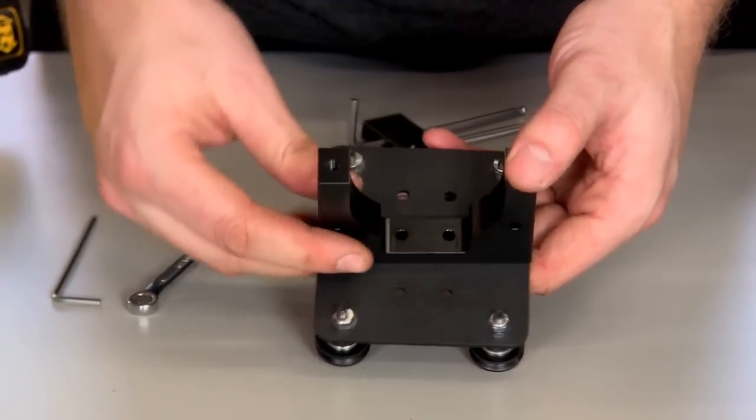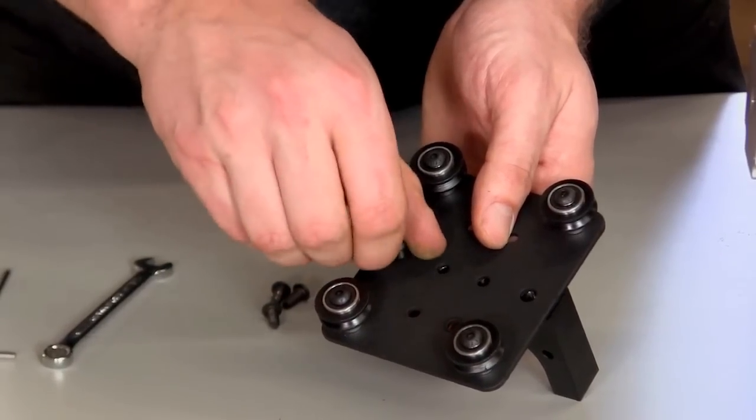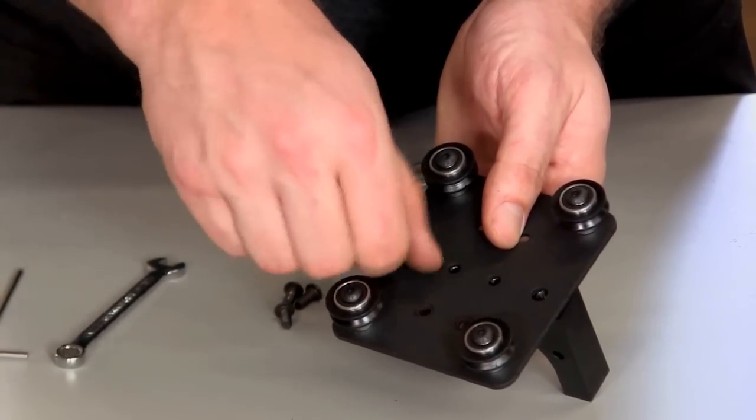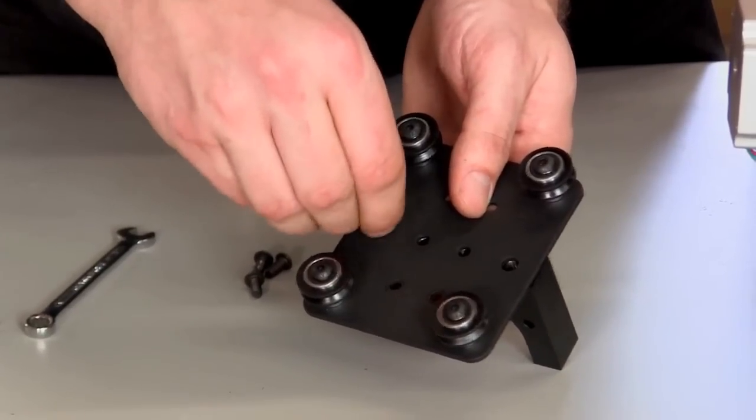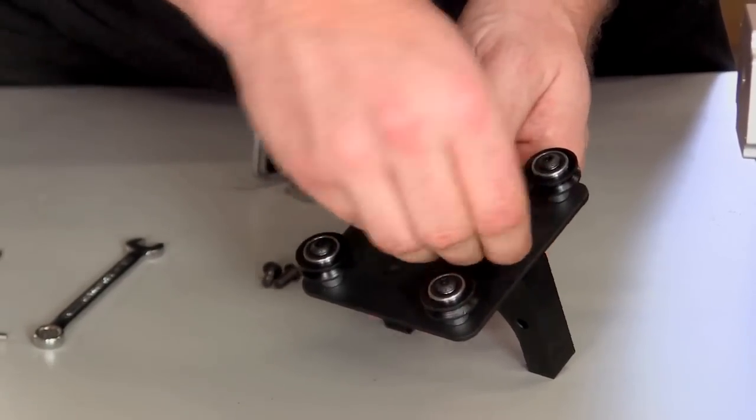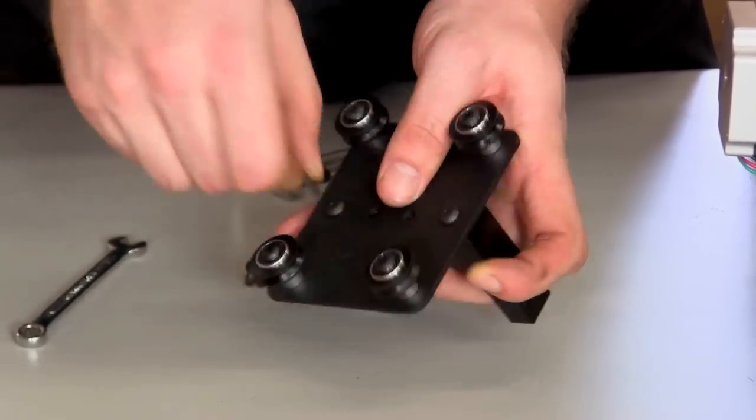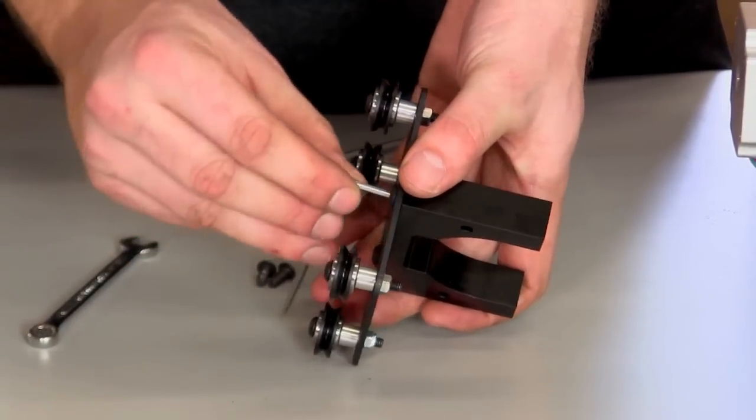Next we'll attach the actual clamp to this plate. Thread screws through the back side of the plate into the threaded holes of the clamp. Start by getting these connections finger-tight, and then tighten them down with the wrench. Be sure that the clamp is aligned square to the plate.